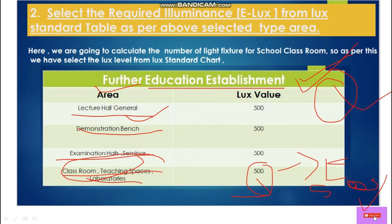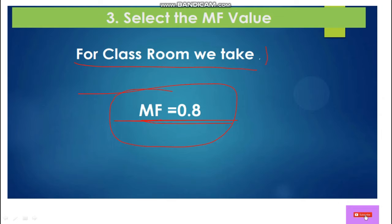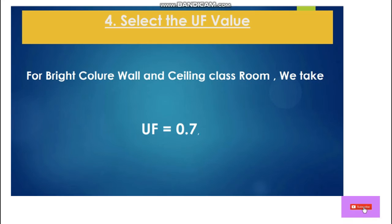Now come to Step 3. For the classroom we take, as per thumb rule, a maintenance factor of 0.8. Then for Step 4, the UF — utilization factor — value is selected. Generally for classrooms this is taken as 0.7.